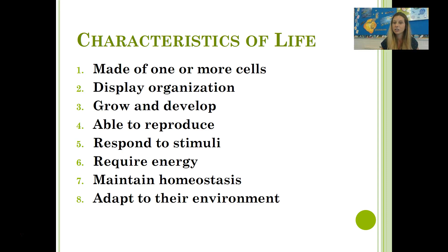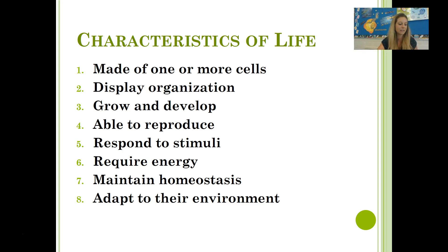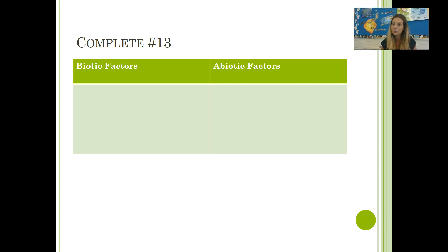In summary, here are the characteristics of all living things: made of one or more cells, display organization, grow and develop, able to reproduce, respond to stimuli, require energy, maintain homeostasis, and adapt to their environment. For your last problem, number 13, you have a list of biotic and abiotic factors — see if you can put those into the correct category. Biotic factors are your living factors; abiotic factors are your non-living factors. Make sure your notes organizer is complete with every question answered so you can use these notes on your homework check for understanding. Have a great night!